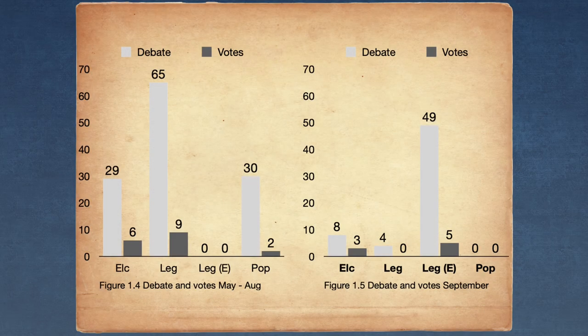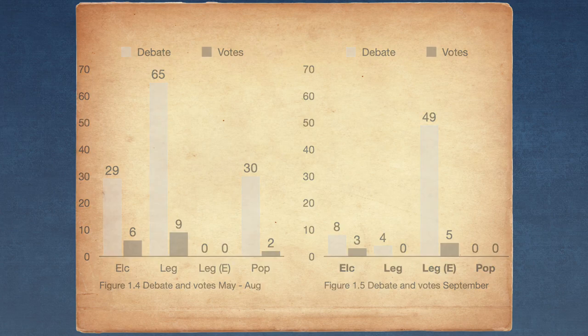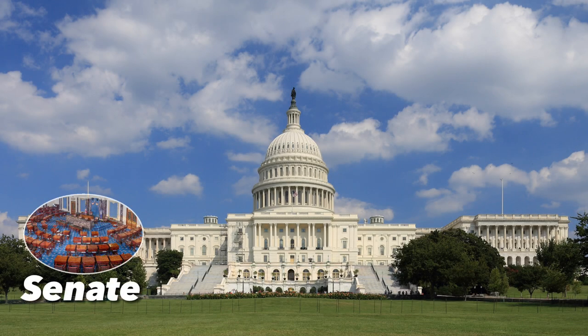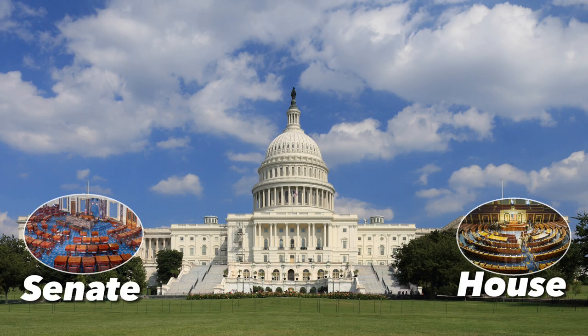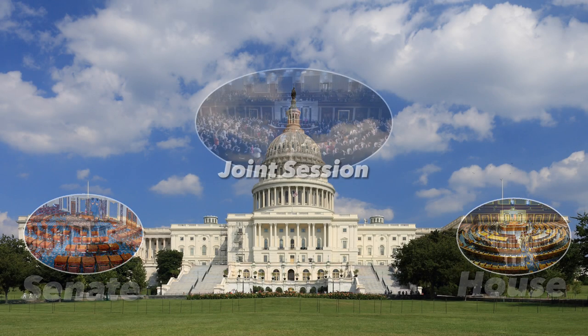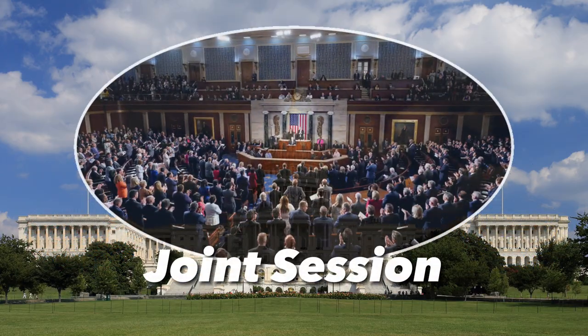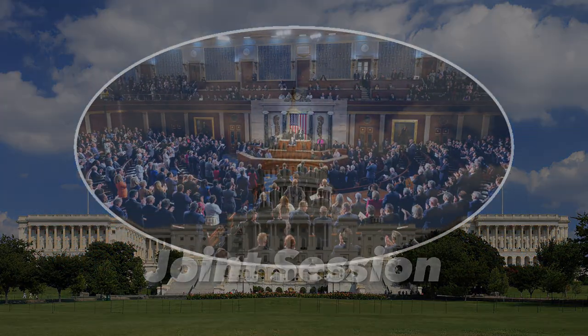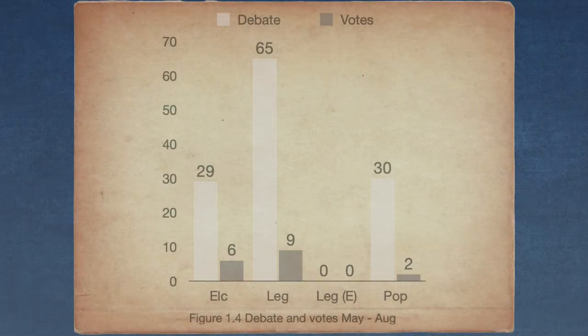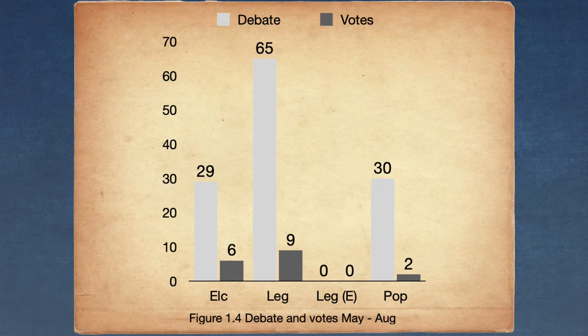In the first phase, from May to August, the appointment method most discussed was the legislature method. This may have been through the Senate, the House of Representatives, or a joint session of both chambers. It was debated 65 times with 9 votes.